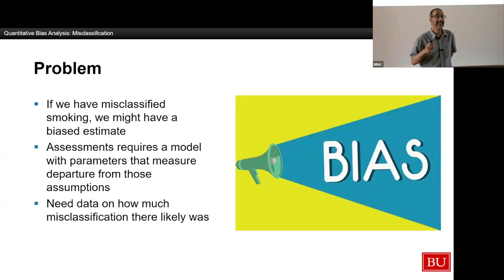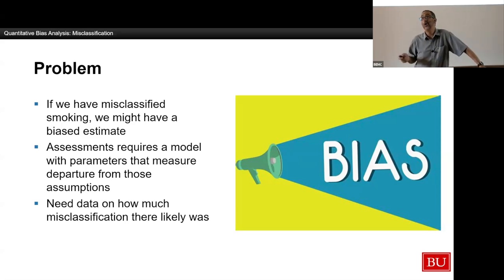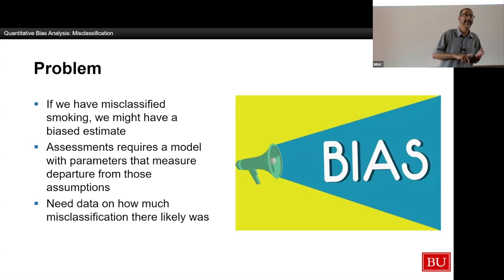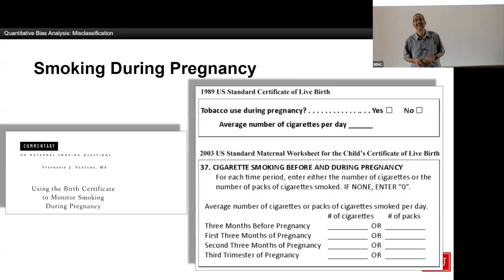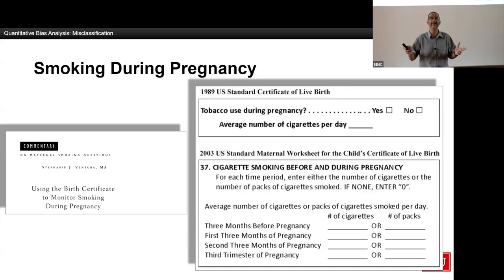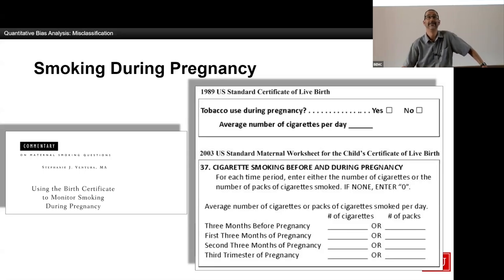Aliza has a source of misclassification in her data. She got her information on smoking during pregnancy from a question on the birth certificate. Imagine: you've just given birth, a doctor comes along filling out the birth certificate and asks, 'Did you smoke during your pregnancy?' You're not going to get great information. The specific problem we worry about is not specificity — nobody who didn't smoke during pregnancy is going to tell a doctor they did, because we've had decades of messaging that you shouldn't smoke during pregnancy. So specificity is going to be high, probably perfect. But sensitivity — among those who truly smoked — is going to be really bad. My guess is around 30% of women who smoked during their pregnancy are actually going to tell you that they did.